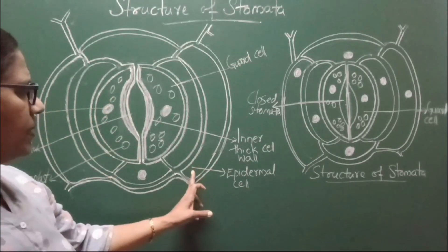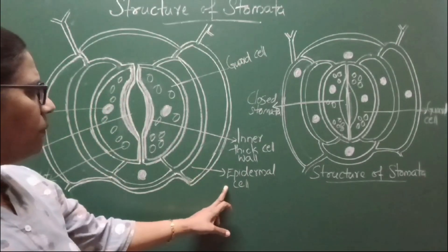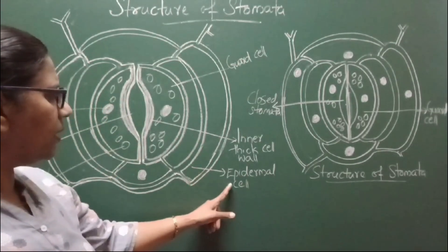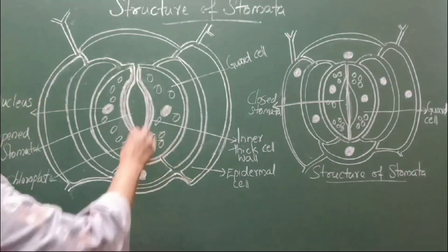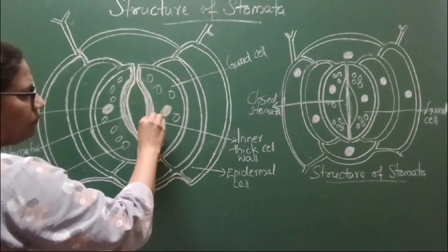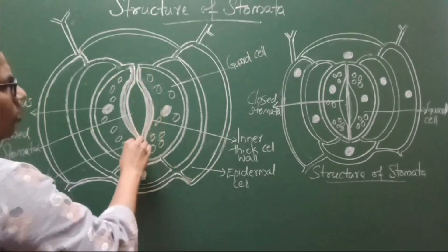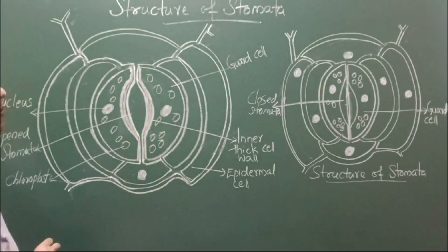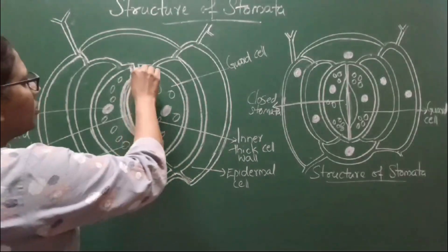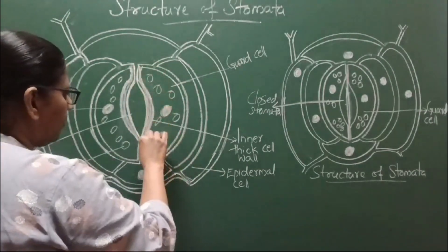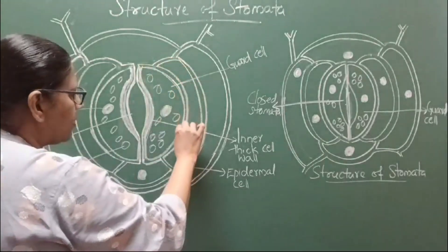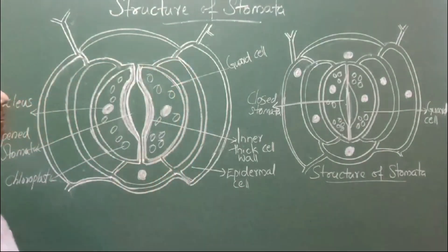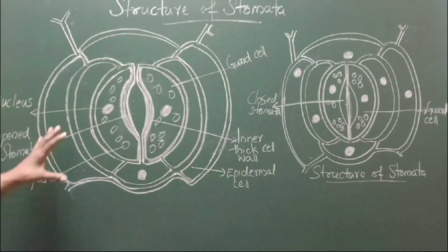This is the epidermal cell. The inner wall is thick — that is the thick cell wall. And this bean-shaped structure is the guard cell. This is the opened stomata.